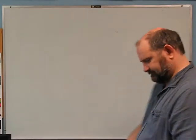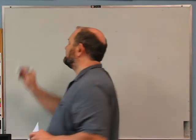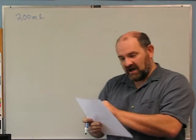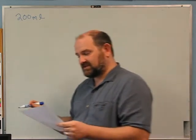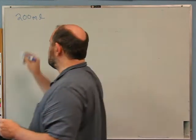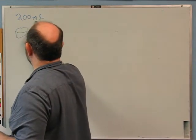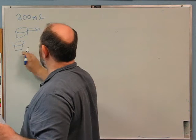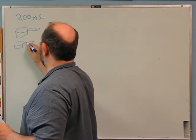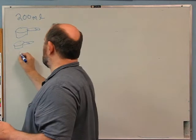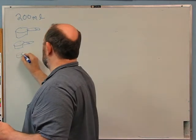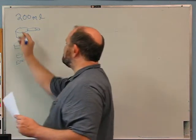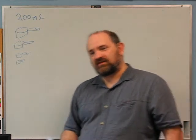Second problem. A recipe calls for 200 milliliters of milk. You need 200 milliliters of milk. Unfortunately you don't have any metric measuring cups. You have measuring cups labeled one cup, half a cup, a third of a cup, and a quarter cup. Those are the measuring cups you have. How do you get the right amount of milk?